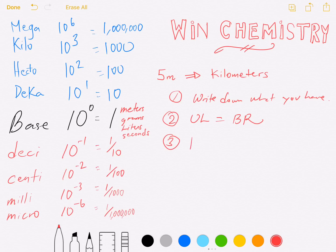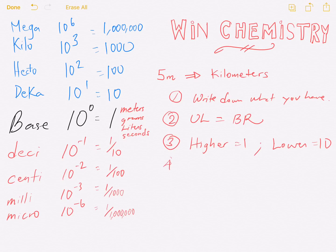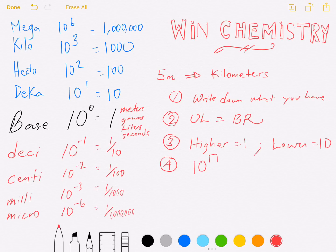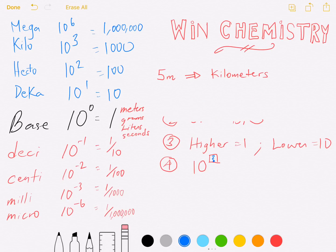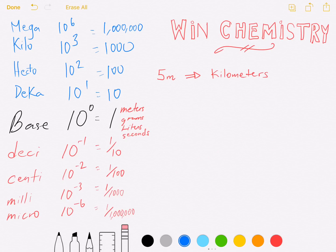Step three: the unit that is higher up on the chart gets the one, and the unit that is lower on the chart always gets the 10. Step four — the fourth and final step — whoever has the 10, you need to figure out the exponent. The exponent comes from reading the chart that's given to you. You don't have to memorize the prefixes, just understand how to use the chart. Following step one, write down what you have, so we start with five meters.